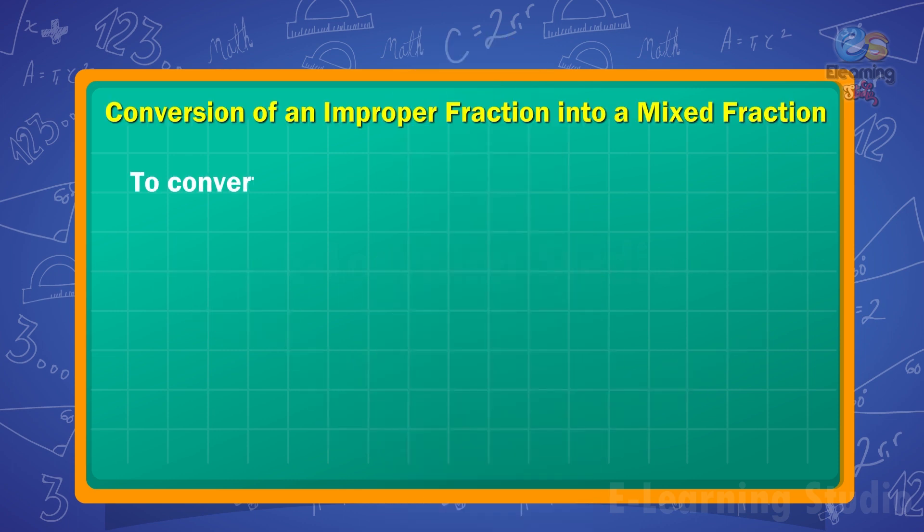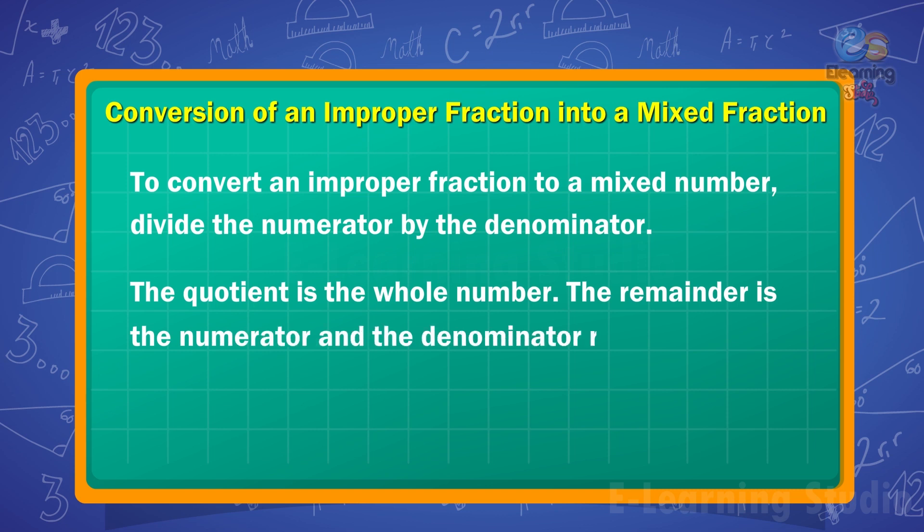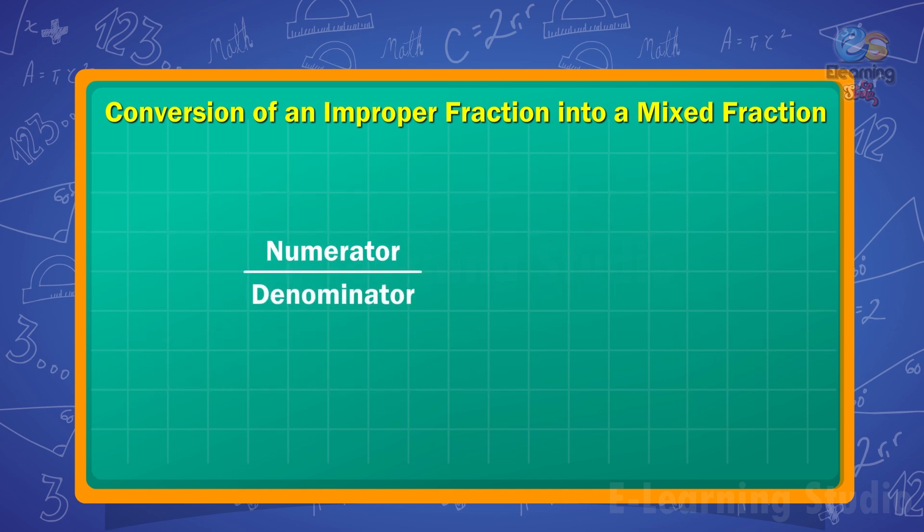Children, to convert an improper fraction to a mixed number, divide the numerator by the denominator. The quotient is the whole number. The remainder is the numerator, and the denominator remains the same as that of the improper fraction. Numerator upon denominator equals mixed fraction.